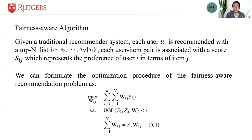which represents the preference of user i in terms of item j. We use this system-generated top-k ranking lists as the baseline and apply a re-ranking algorithm to maximize the sum of preference scores